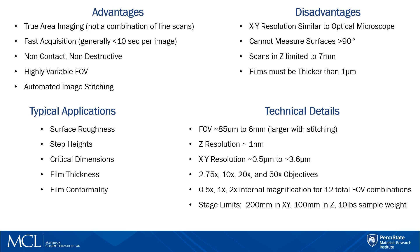When comparing optical profilometry to other techniques that provide similar datasets, it's important to consider a few things. We're collecting an entire surface image, not a combination of line scans. This minimizes the effect of sample drift and allows for fast acquisition of data, generally less than 10 seconds per image. A highly variable field of view, paired with the ability to stitch images together, allows for large portions of a surface to be measured in a realistic amount of time.